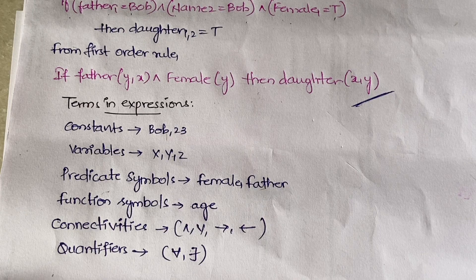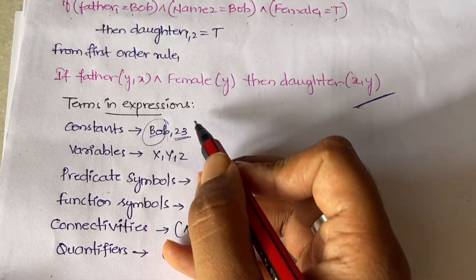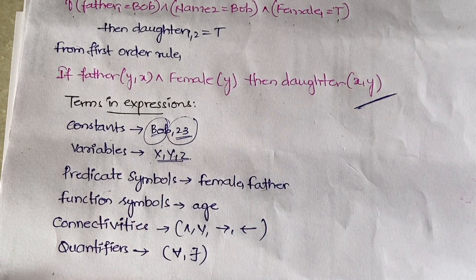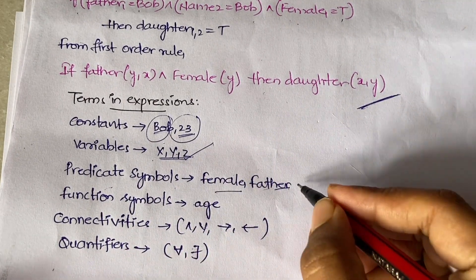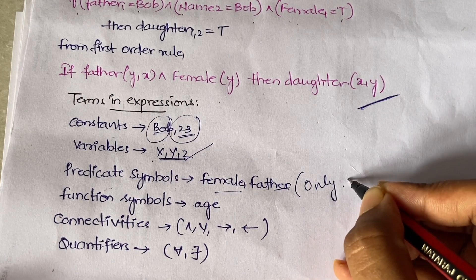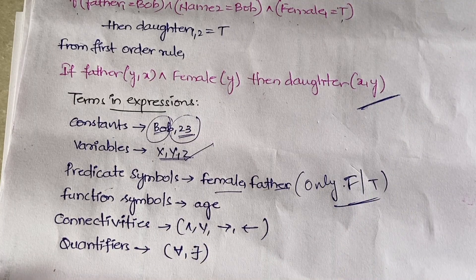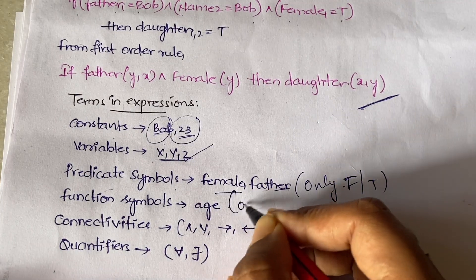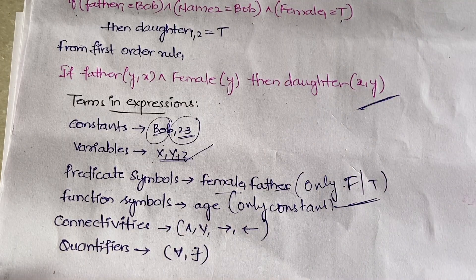In a first order logic expression you have: constants — like Bob (a name that doesn't change) or 23 (an age that doesn't change); variables — like X, Y, Z, values which keep changing; predicate symbols — like female and father, which can only have a true or false value; and function symbols — which accept only constant values.